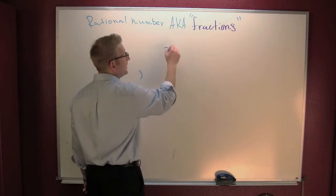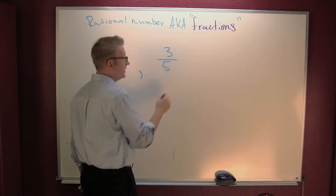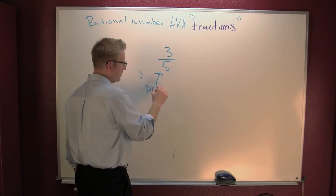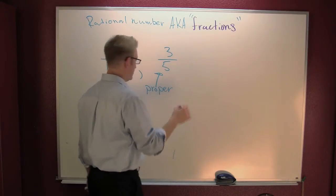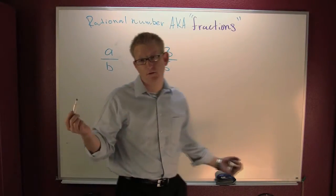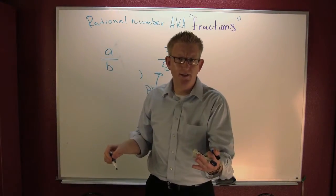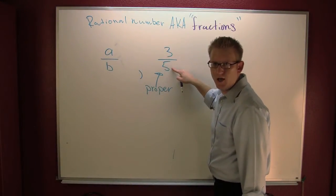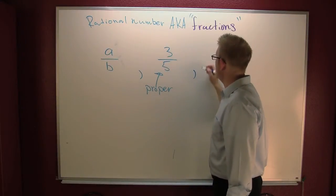This one, say 3 over 5, is proper. Does that mean it has a top hat and cane? No, man. That means that the numerator is smaller than the denominator.